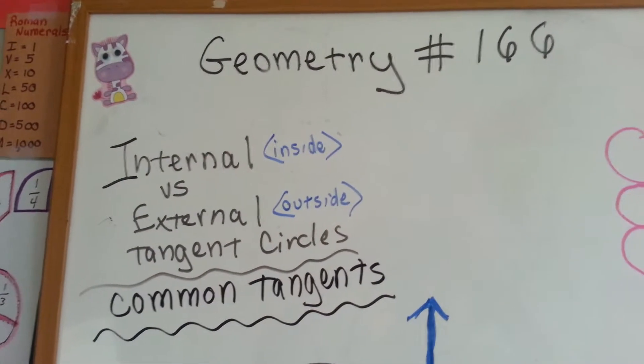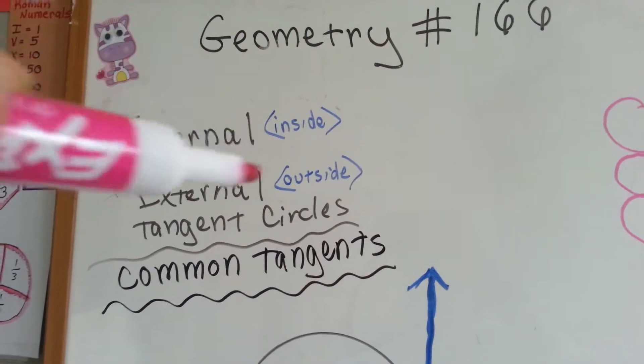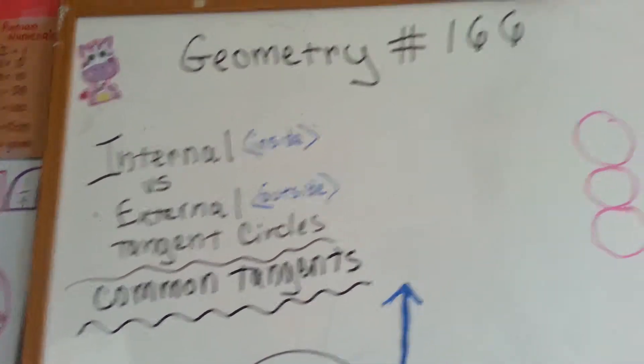Geometry number 166: internal versus external tangent circles, inside versus outside, with common tangents.